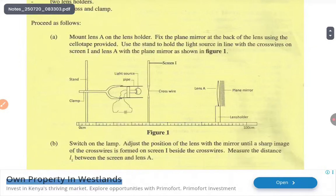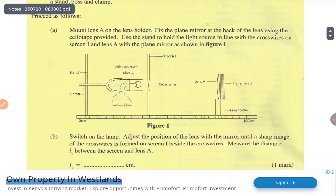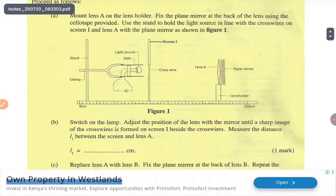Mount lens A on the lens holder. Follow the instructions as you are being guided and then make the observation. Switch on the lamp, adjust the position of the lens with the mirror until a sharp image of the cross wire is formed on screen one beside the cross wire. Measure the distance L1 between the screen and lens A. It's a simple start. You write the length in centimeters.